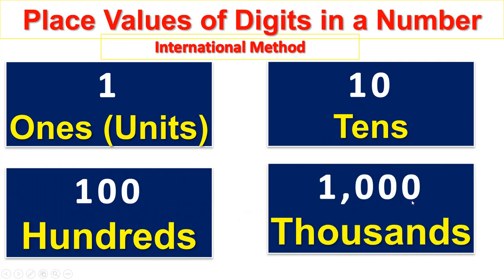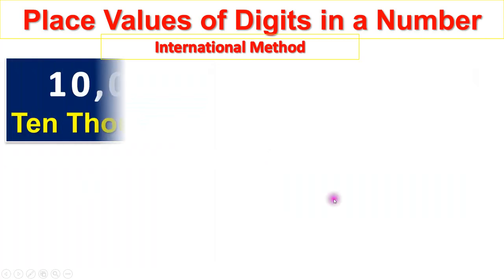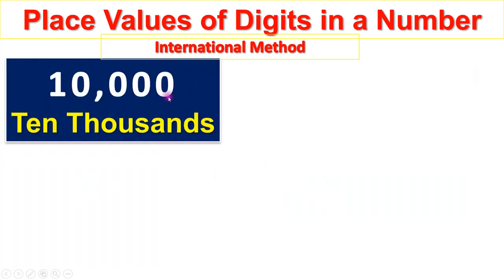Ones, tens, hundreds, thousands. Units, tens, hundreds, thousands, ten thousands.